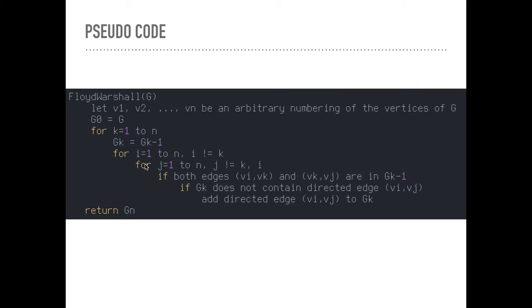So two for loops from i equals 1 to n, for j equals 1 to n. If both edges (vi, vk) and (vk, vj) are in the graph gk-1, then like we said, if edge (a,b) and (b,c) are in the graph gk-1, then we look at the next graph.